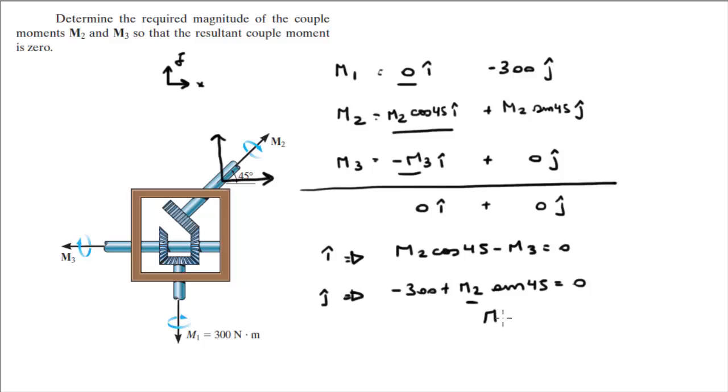When you do, you get that M2 is equal to 424.3 Nm. And when you plug that into this equation, you can find M3.